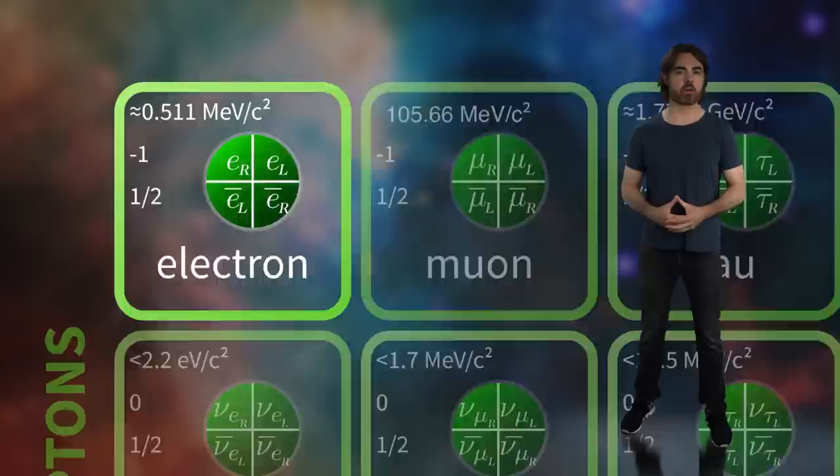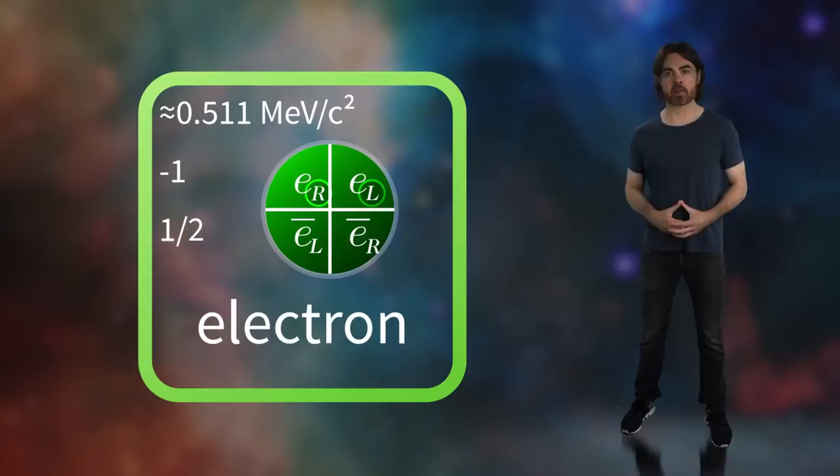Like electric charge, chirality is also reversed in antimatter. For example, both left and right chiral or negatively charged electrons have their own positively charged antimatter particles, which are right and left chiral, respectively. These different chiralities are thought of as completely separate particles, and there's a good reason for this.